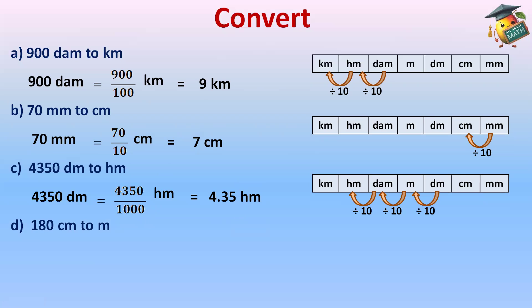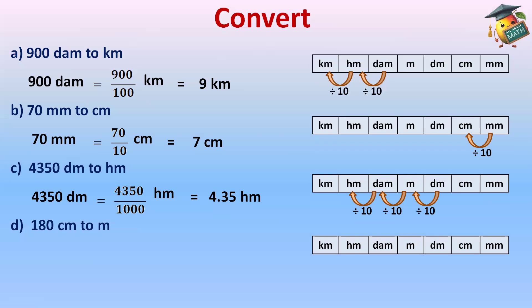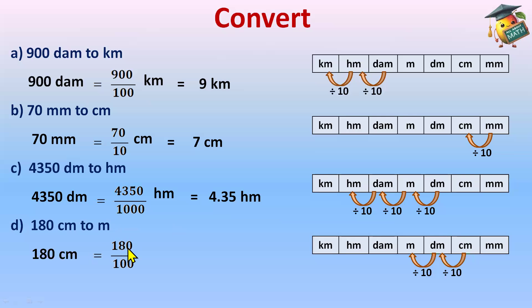180 centimeters to meter. We have written the units with the help of the mnemonic. Centimeter to meter — moving backward, right to left. Centimeter to decimeter, then decimeter to meter — two jumps, divide by 100. 180 centimeter ÷ 100 = 1.80 or 1.8 meter. When dividing by 100, the decimal shifts two places to the left side. 1.80 is also correct.